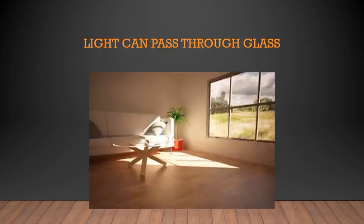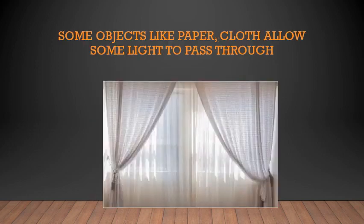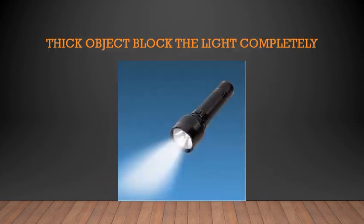Light can pass through glass. For example, windows — even if you close the window, there will be bright light in your house if the house is directly facing the sun. Some objects like paper and cloth allow only some light to pass through them, like curtains — some light does not allow the full bright sunlight to come inside, but some light can pass through. It depends on the quality of the cloth. Some curtains are good enough to block the sunlight completely. Thick objects block the light completely — if you have a torch facing a wall, you will see only the wall and there will be no shadow on the other side, as it completely blocks the path of light.